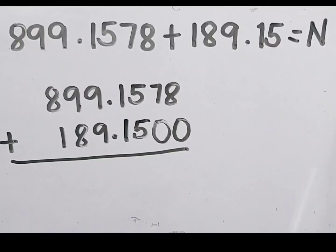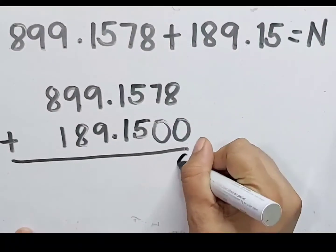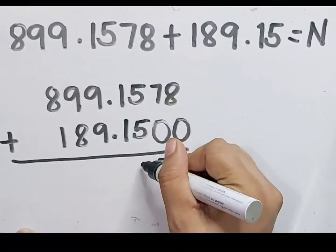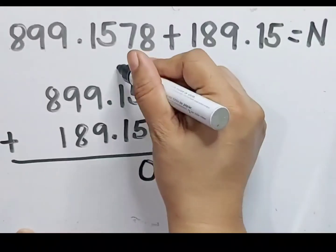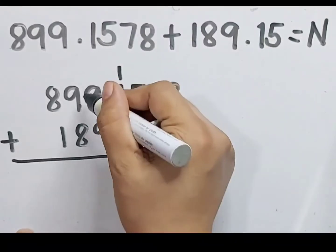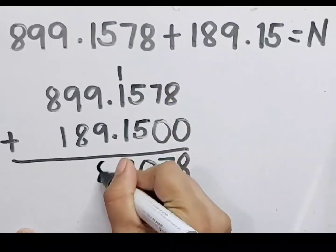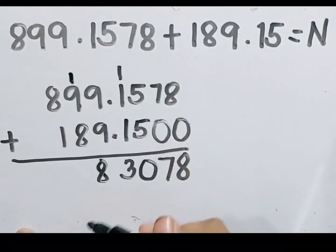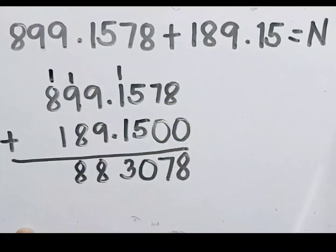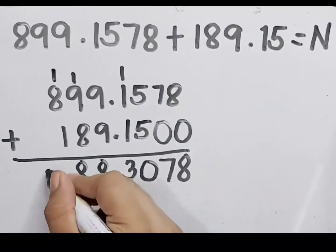The next step is to add this as we are adding whole numbers. Regroup if necessary. 8 plus 0 is 8, 7 plus 0 is 7, 5 plus 5 is 10. So let's regroup 1. 1 plus 1 plus 1 equals 3. 9 plus 9 equals 18. Regroup 1. 9 plus 1 plus 8 equals 18. Regroup 1. 1 plus 8 plus 1 equals 10.